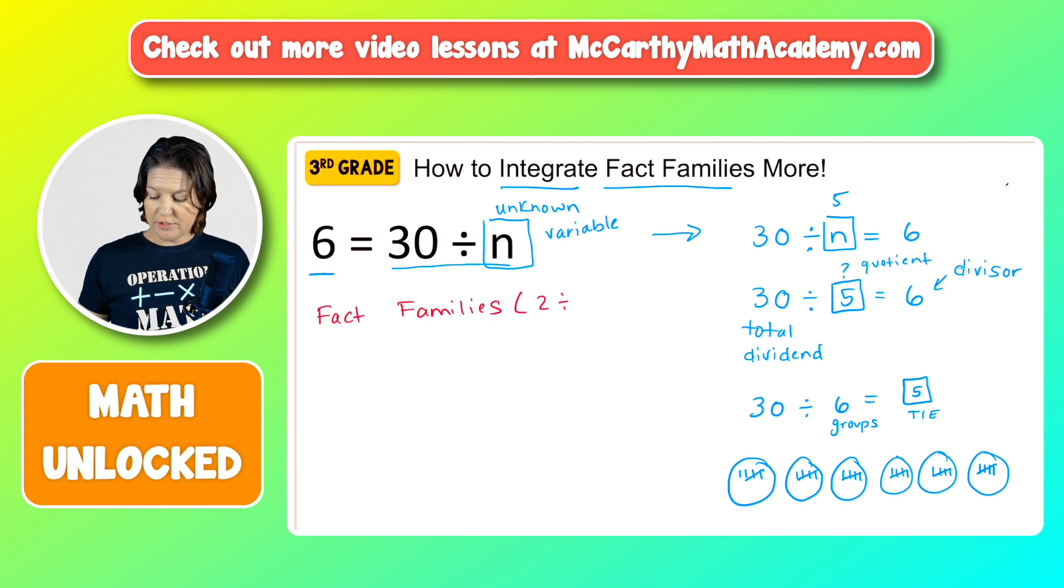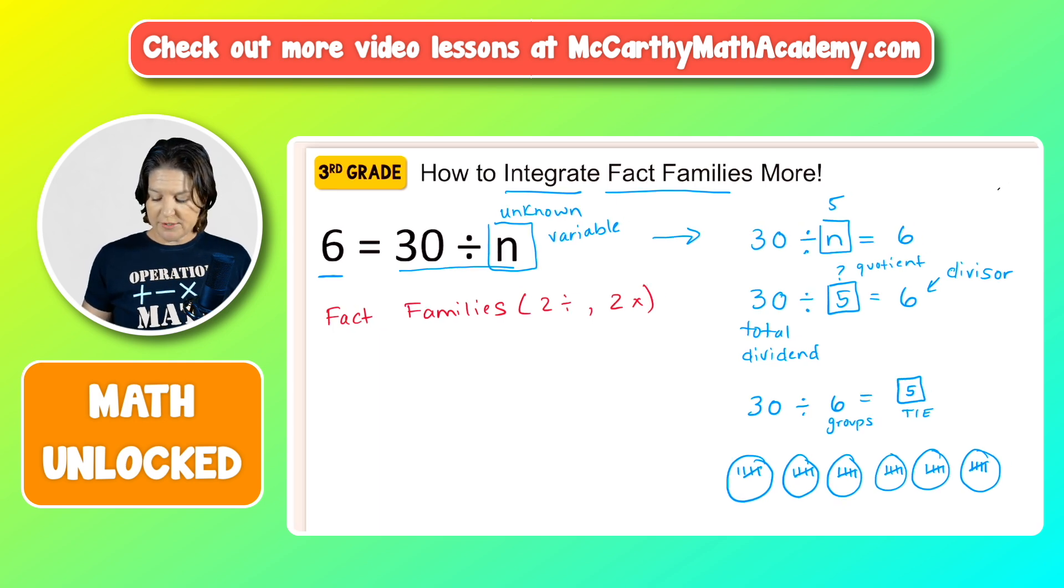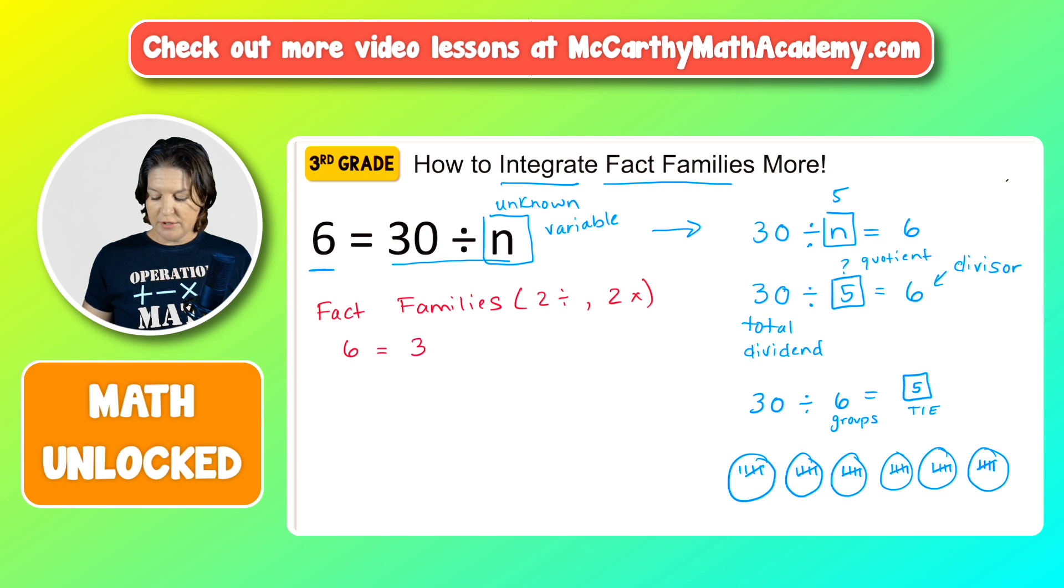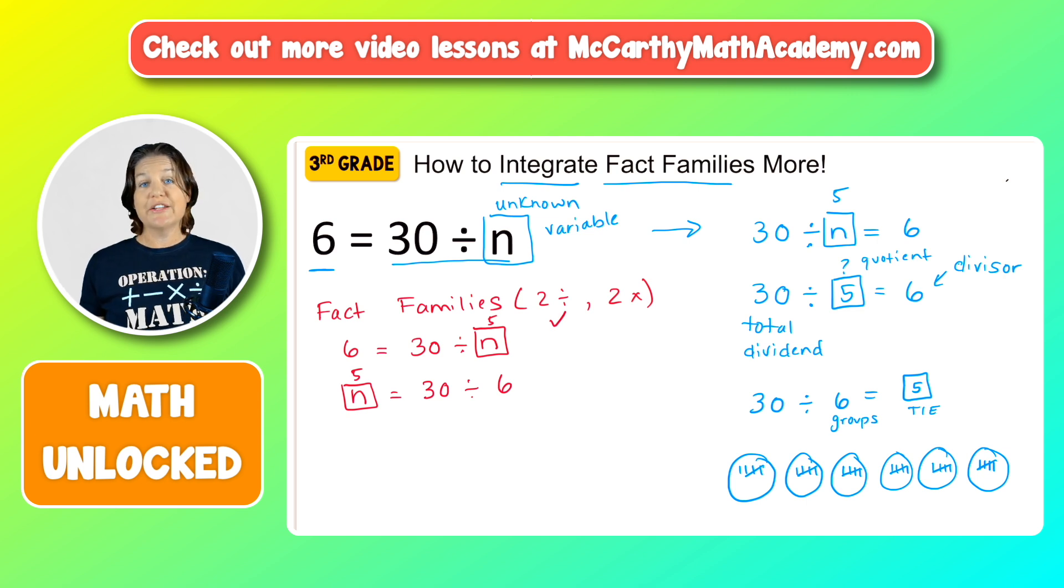For this one, we need two division and two multiplication equations. So let's take what we got first. We have that 6 equals 30 divided by N, and we know the value of N equals 5. We could also say N equals 30 divided by what? Six. And the value of N equals 5. There we have two division equations.